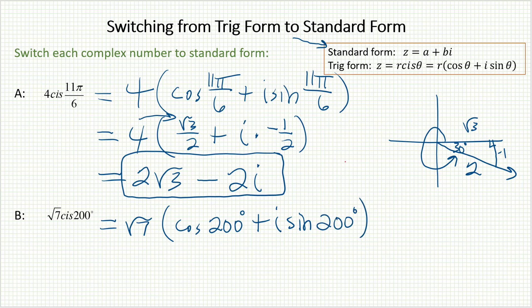200 degrees is not a nice angle, so I'm going to end up having to use the calculator. What I should do is first distribute this piece into both parts, so that I know what I need to type.